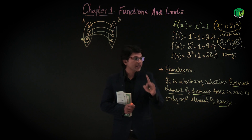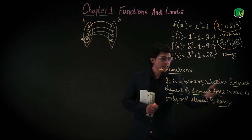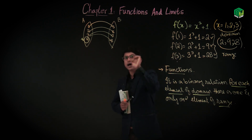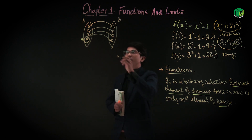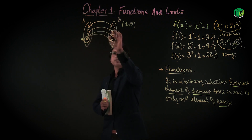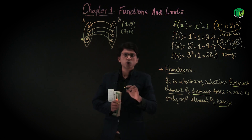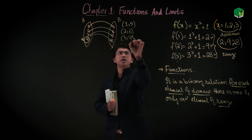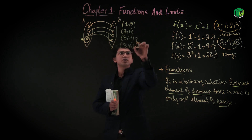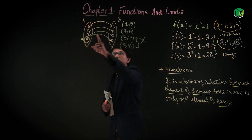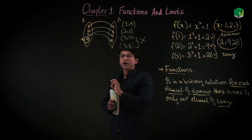The second condition: for each element of domain there is one and only one element of range. So 1 maps to 5 (pair 1,5), 2 maps to 6 (pair 2,6), 3 maps to 7 (pair 3,7), and 3 also maps to 8 (pair 3,8). These two conditions are not satisfied because one domain element (3) has two ranges — 7 and 8. So this is not a function.